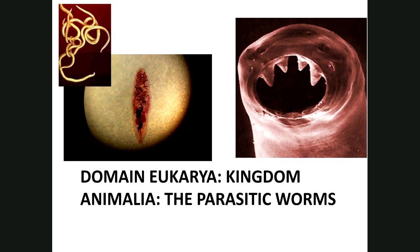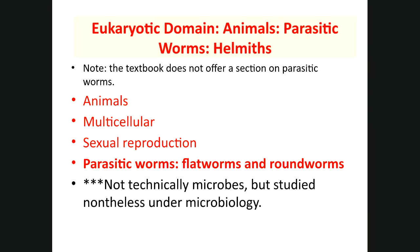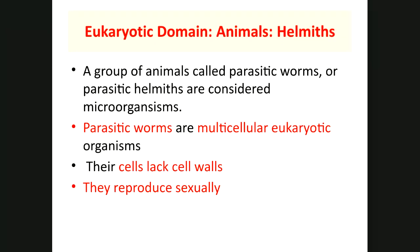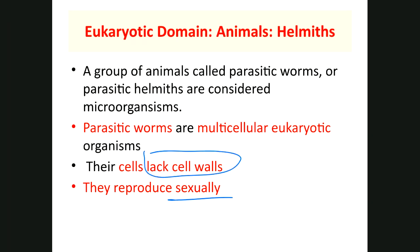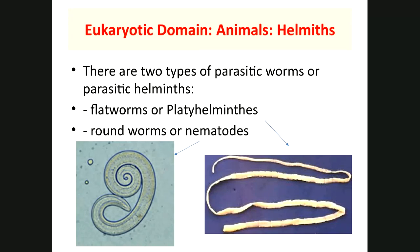The last group of microorganisms we study don't really belong in microbiology but are studied in medical microbiology — parasitic worms. These are actually animals: multicellular, reproducing sexually. There are two forms: flat worms and round worms. They're not technically microbes, but we study them in medical microbiology. They don't have cell walls because they're animals. Flat worms are also called platyhelminthes; round worms are called nematodes.